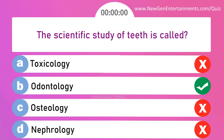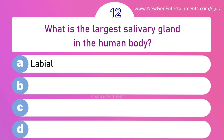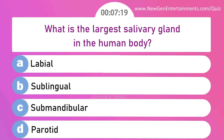What is the largest salivary gland in the human body? Options are: A) Labial, B) Sublingual, C) Submandibular, and D) Parotid. Answer is option D: Parotid.